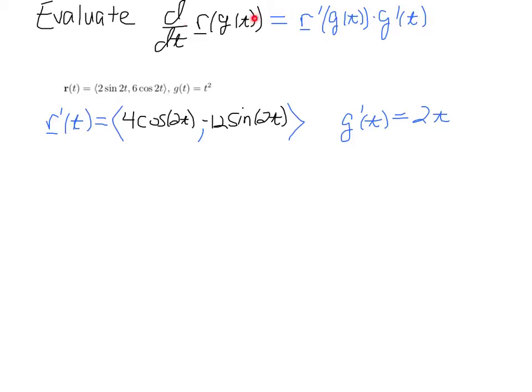Now I'm going to invoke the chain rule here. So d/dt of the vector-valued function evaluated at g of t is now going to be, I have 4 cosine of 2. And the argument here is t, but remember now, this is evaluated at g of t, so I have to take g of t from over here and evaluate it in that argument. So that means we will get a t squared here.